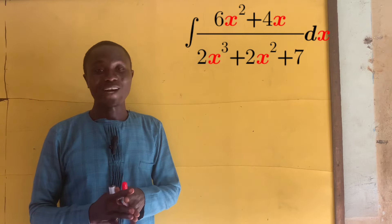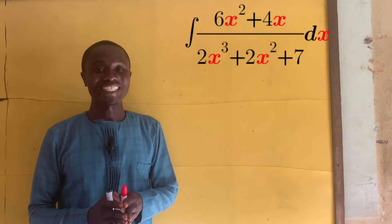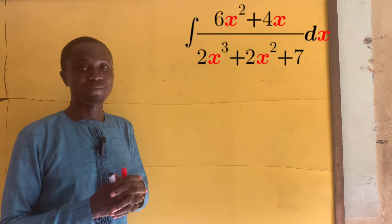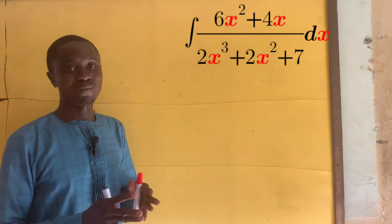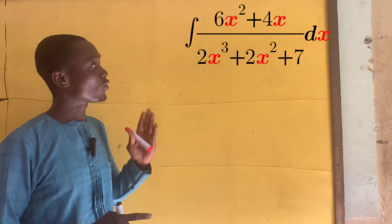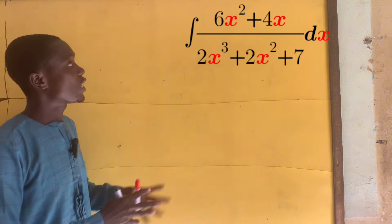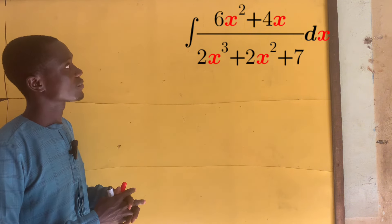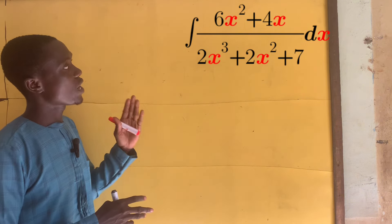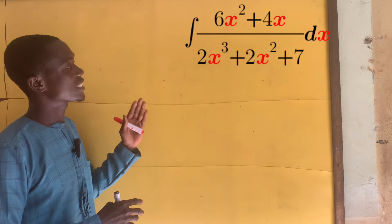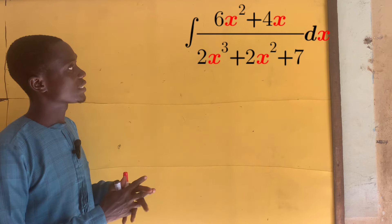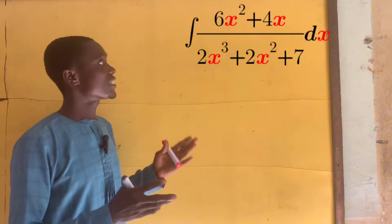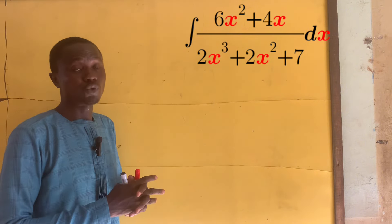Hello and welcome to my channel, I am Mensah Augustin. In this lesson we'll be solving this nice integral question, thanks to our favor from Nigeria for sending me this question. We are to integrate 6x squared plus 4x divided by 2x cubed plus 2x squared plus 7x — this is an indefinite integral because you don't have the limits.